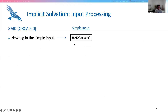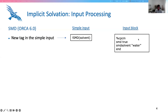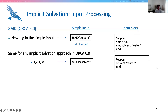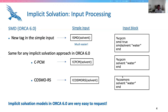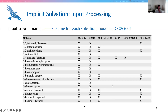For SMD, we now have a new way to request it via the simple input — we just write SMD and the name of the solvent. This contrasts with ORCA 5, where we had to use the CPCM block with four lines. That is still doable, but it's much easier via the simple input. This strategy extends to all solvation methods: CPCM, ALPB, DD-Cosmo, CPCMX, and CosmoRS. Here is a snapshot of the table with possible input names for solvents across different implicit solvation approaches. For instance, for dioxane, we have two names and can write either, regardless of whether we use CPCM, SMD, CosmoRS, ALPB, or DD-Cosmo. This is really an advantage.